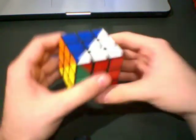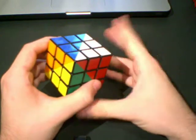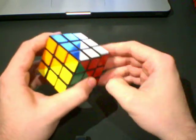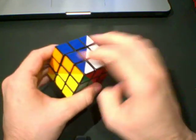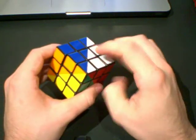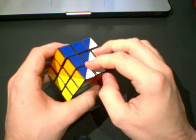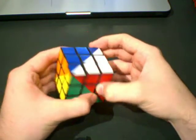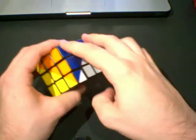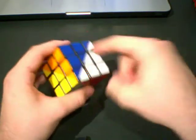As far as the last layer type of things, that's really important that you know either a four look or a two look. I'm going to put the algorithms for the edge cycles, whether it's a clockwise, counterclockwise, Z perm, or H perm. I'm going to put all those down below and I'll also include the corner cycle for the corners.